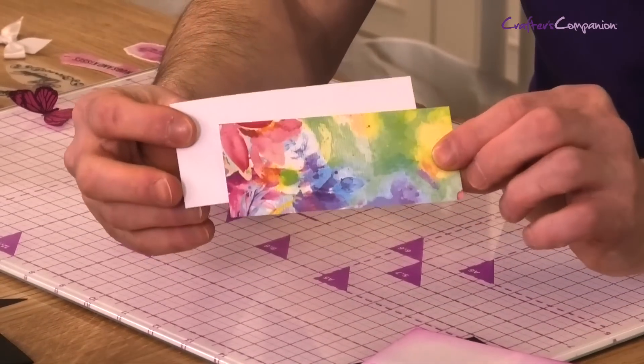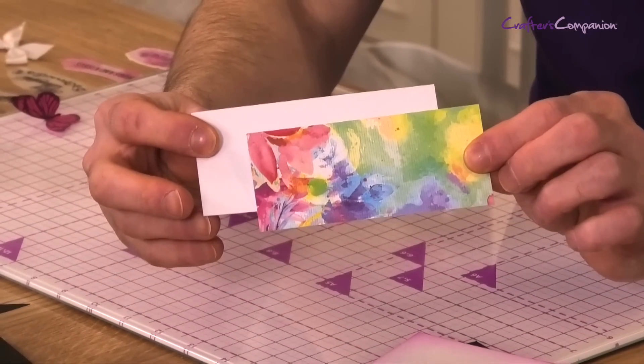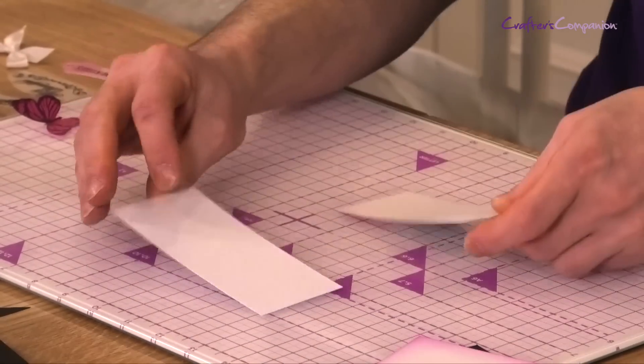If we just pop that to the side at the moment, we've just got some of the wee elements, so we've got some of the pattern background papers and then we've got some cardstock. So we're just going to do a bit of matting and layering.